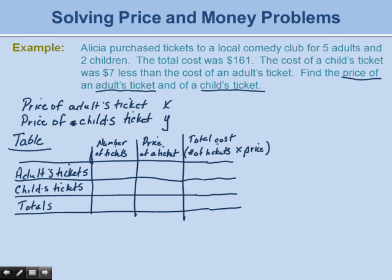We fill in the price column with X for adults and Y for children. From the problem, Alicia purchased five adult tickets and two children's tickets, so those go in the number column. Total cost for adults is 5X, for children is 2Y. The total number of tickets is seven, and the total cost is 5X plus 2Y.